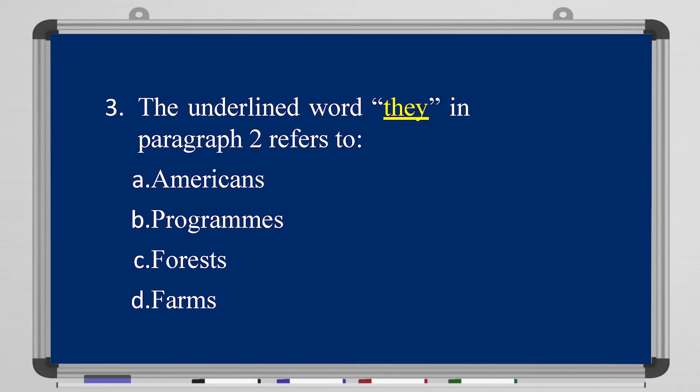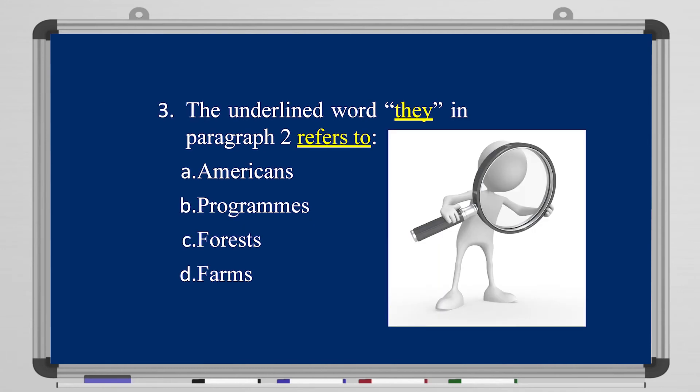Question number three: the underlined word 'they' in paragraph two — what does it refer to? Does it refer to the Americans, to programs, to forests, or to farms? Go back to the text, look at the word 'they,' and ask yourself: who is 'they'? The answer is the Americans, of course.